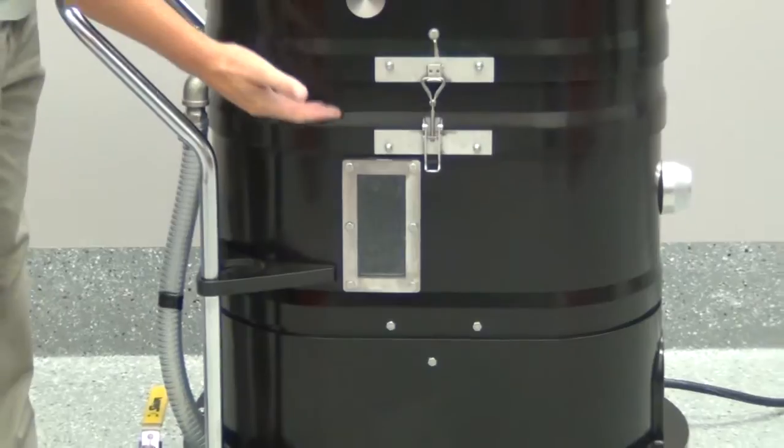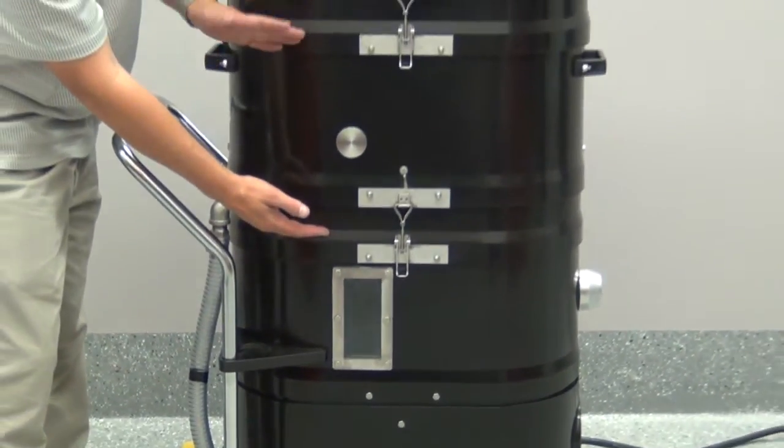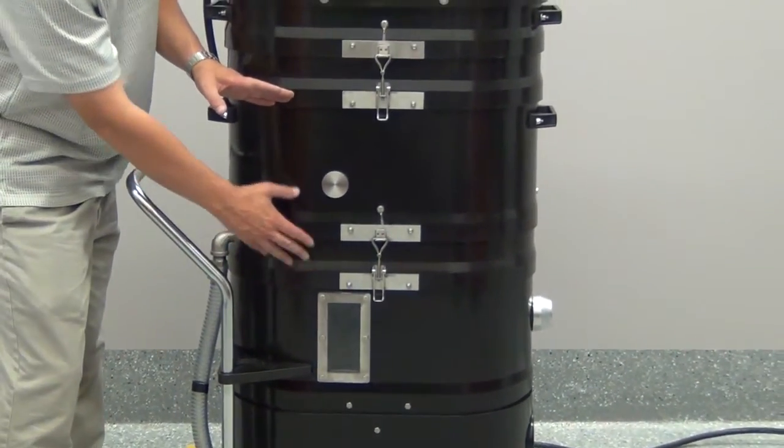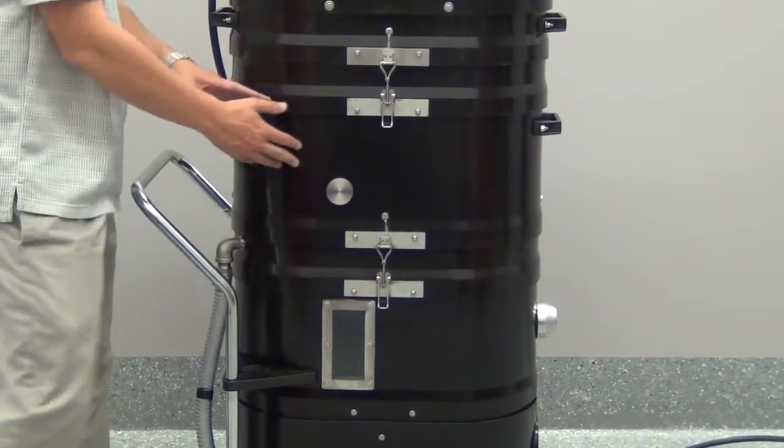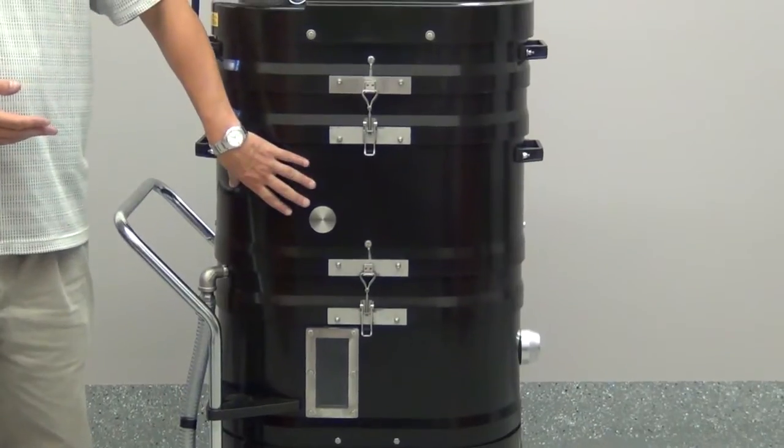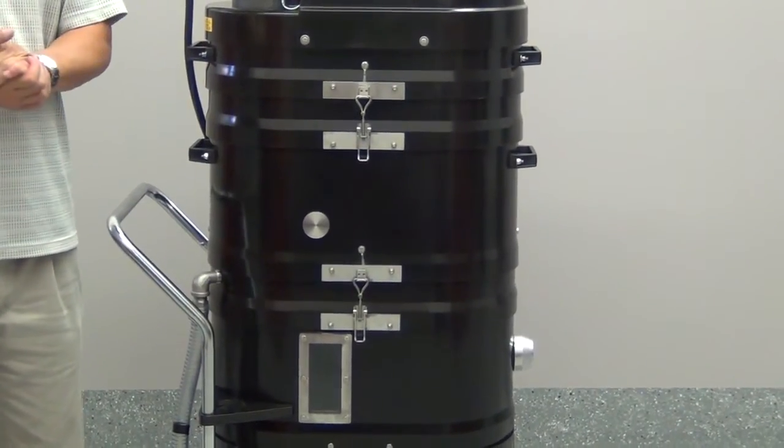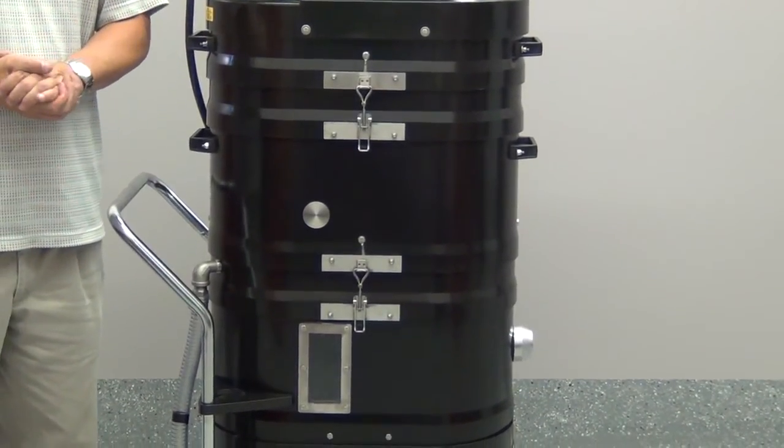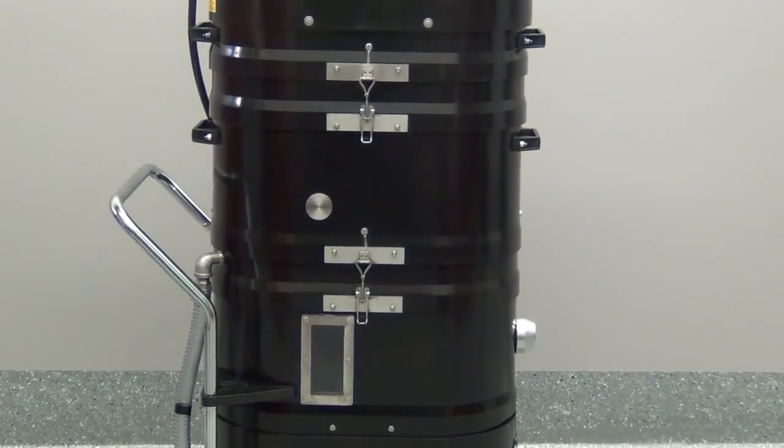From there, the clean air will enter a demisting pad section and our hydrophobic filter system that filters down to 0.5 microns. That is a completely cleanable system. The filtration system is oversized at 40 square feet, so you have plenty of surface area for the amount of airflow that you're moving.